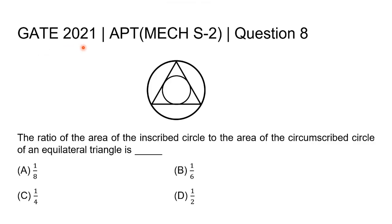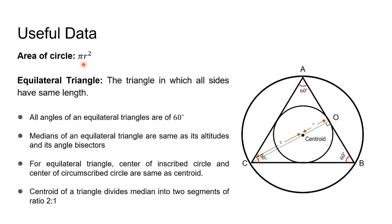This question is from GATE 2021 Mechanical Engineering Set 2. The question is to find the ratio of area of the inscribed circle to the area of the circumscribed circle of an equilateral triangle. In this figure, the inner circle is the inscribed circle of the equilateral triangle — it passes through all its sides. The outer circle, which passes through all its vertices, is the circumscribed circle. To find the ratio of the areas we use pi r squared. Triangle ABC is equilateral, so all sides are equal and all angles are 60 degrees.